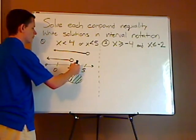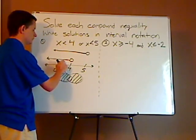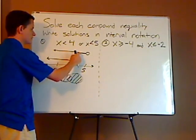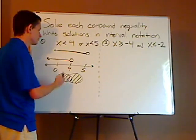Like for example, 4.5 doesn't fall on this ray, but it falls on this ray, so 4.5 would be a solution, because it's an or statement.